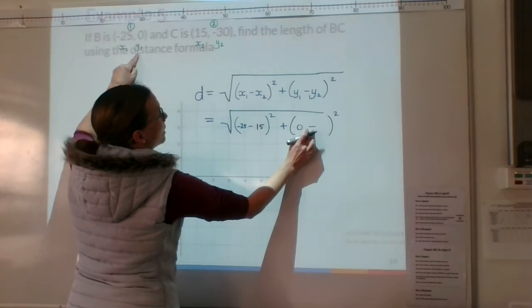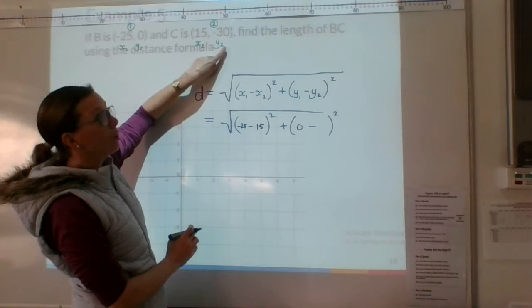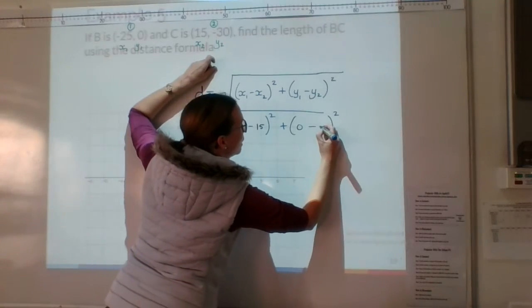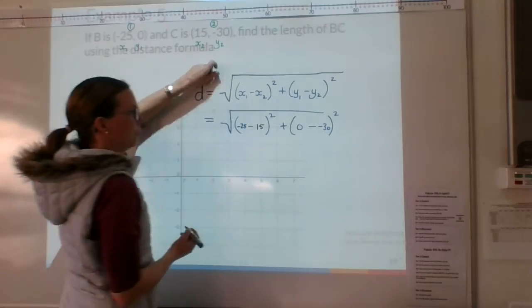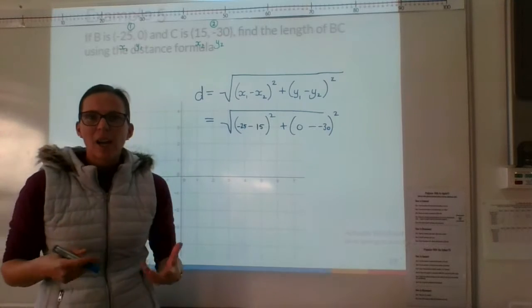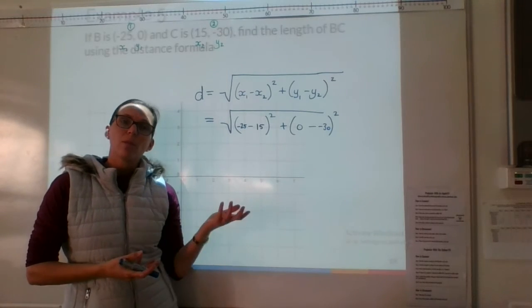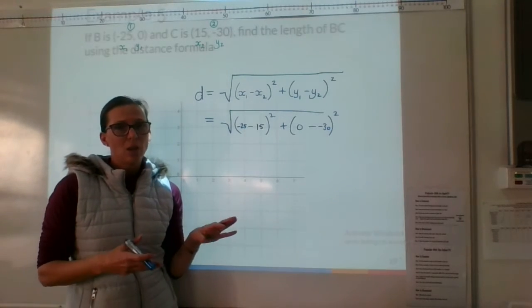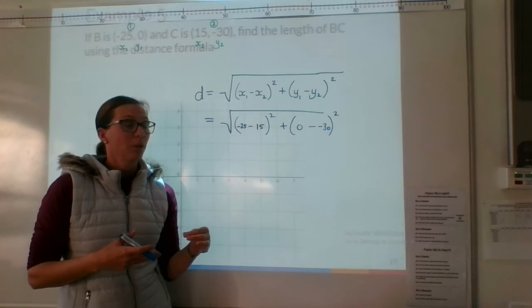Take y2, negative 30. Alright, so this is starting to look a bit messy because it's involving negative values. So take your time with negative values and think it through.